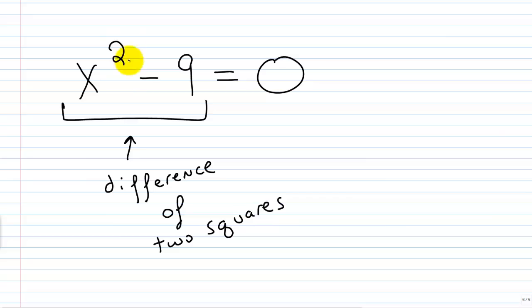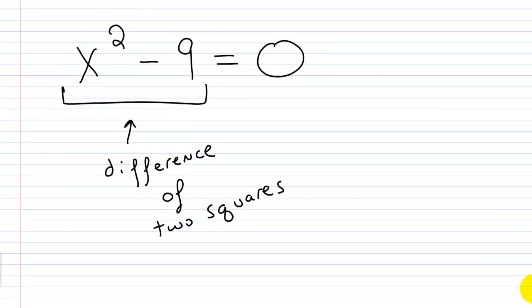Because if I look here, this is x squared, and then if I look at this 9 here, 9 is really 3 squared. So if I notice that right off the bat, it's easy to factor this. I'm going to factor this into x plus 3 times x minus 3, and this equals 0.